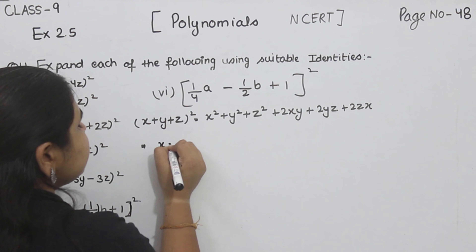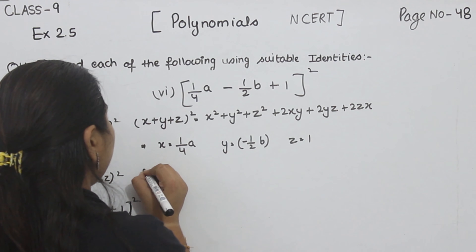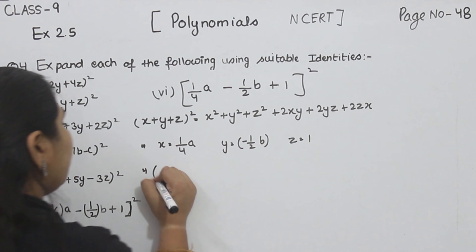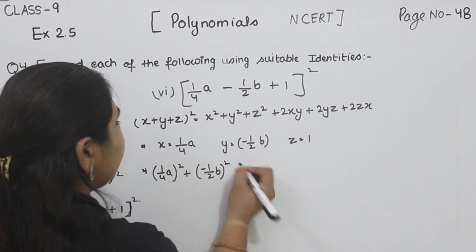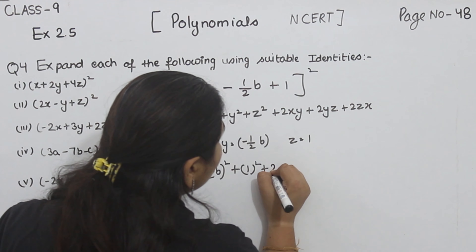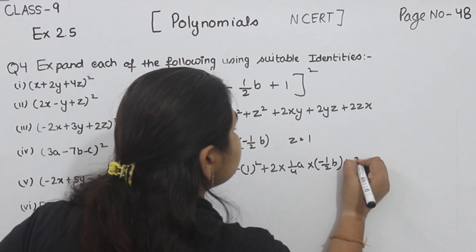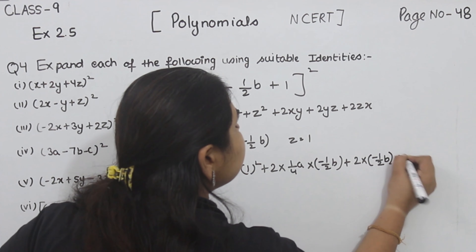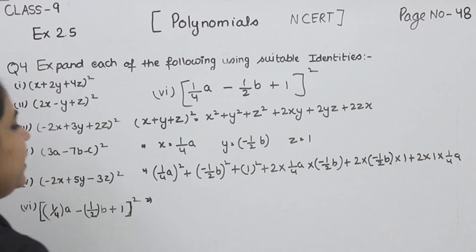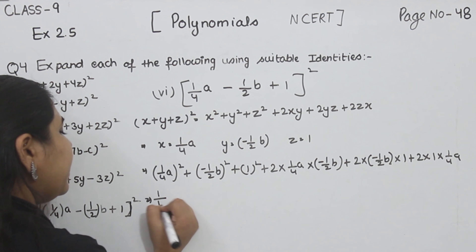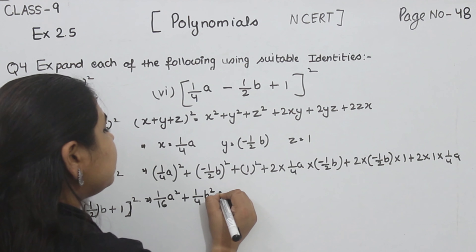Now here X is equal to 1/4 a, Y is equal to minus 1/2 b, and Z is equal to 1. We put these into the identity: X square is 1/16 a square, plus Y square is 1/4 b square, plus Z square is 1. Now plus 2XY, plus 2YZ, plus 2ZX.